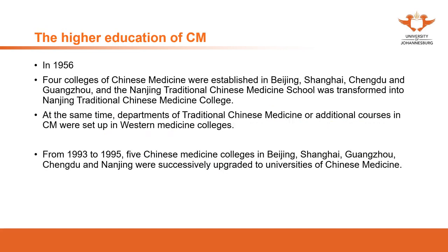For higher education, in 1956, four colleges of Chinese medicine were established — in Beijing, Shanghai, Chengdu, and Guangzhou. And Nanjing Traditional Chinese Medicine School was transformed into Nanjing Traditional Medicine College. Later on, all these colleges were upgraded into Chinese medicine universities.